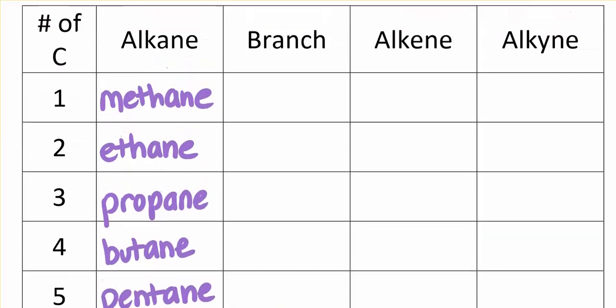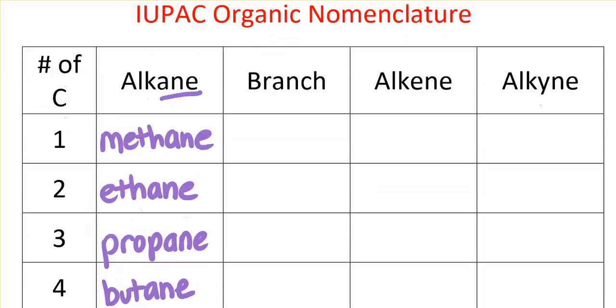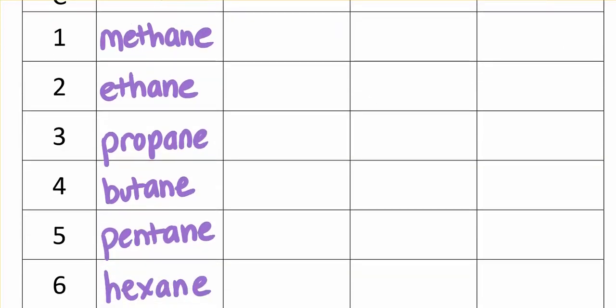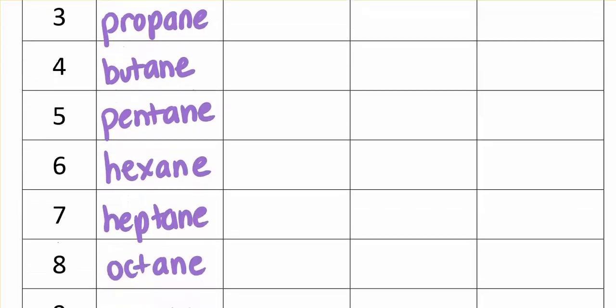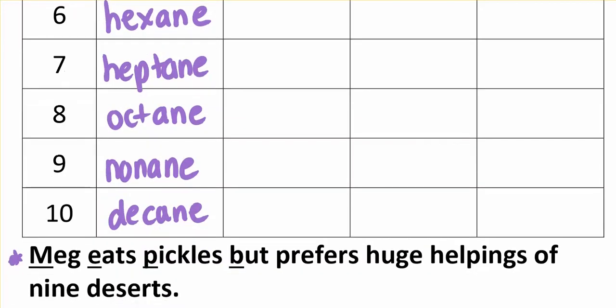Notice one more thing before we go on: these are alkanes. They have all single bonds, and that's why they all end in '-ane.'